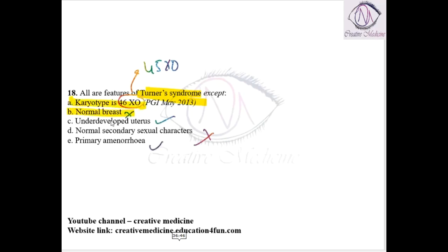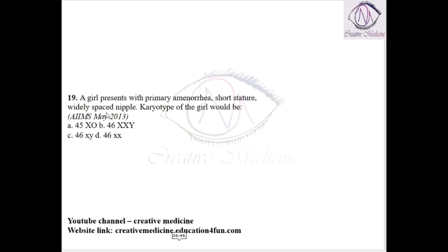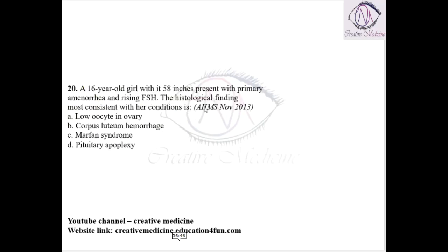Next question: A girl child presents with primary amenorrhea, short stature, and widely spaced nipples. The karyotype would be 45 XO.